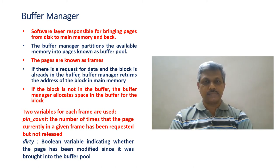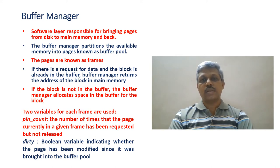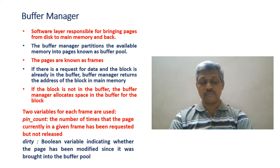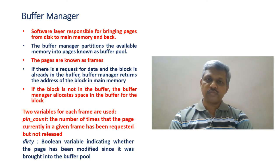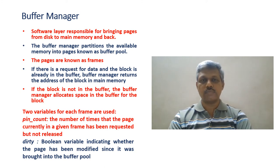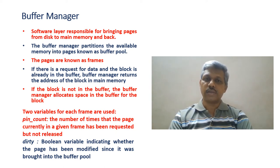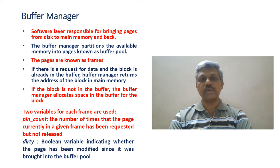One is a pin count and another is dirty. Pin count refers to the number of times a page has been requested and is currently in use in a given frame, and has not yet been released back. Dirty is a Boolean variable which by default is set to zero. If a page has been brought only for read purposes, dirty is zero. Whereas if a transaction has written something on a page and it has not yet been transferred to disk, the dirty variable is set to one — indicating the page has been modified and must be written back to stable storage.